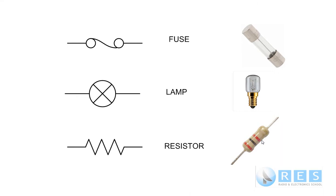When current flows through a resistance, heat is generated. If the resistor is too small it will act like a fuse and burn out, so large resistors are used where there is a lot of heat dissipation. Don't forget you can do the drill software to test your knowledge of whether you've remembered these symbols. Do the drill software for this tutorial.